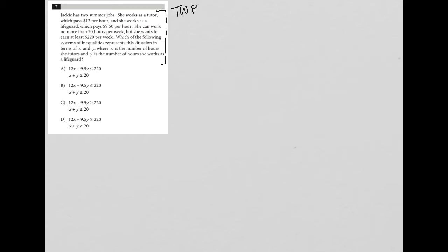This question says Jackie has two summer jobs. Makes complete sense to me. She has two summer jobs. She works as a tutor, which pays twelve dollars per hour. So there's my first quantitative information. So I'm going to say tutor equals twelve dollars per hour, and she works as a lifeguard, which pays nine dollars and fifty cents per hour. So lifeguard equals nine dollars and fifty cents per hour.